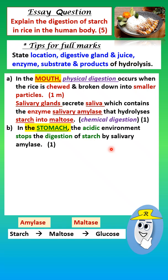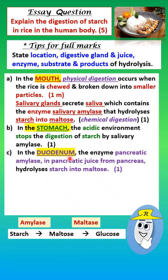The third organ is the duodenum, which is the first part of the small intestine. In the duodenum, the enzyme pancreatic amylase in pancreatic juice from the pancreas hydrolyzes starch into maltose. Pancreatic amylase is different from salivary amylase, but the reaction is the same — this amylase also hydrolyzes starch into maltose. That's one mark.